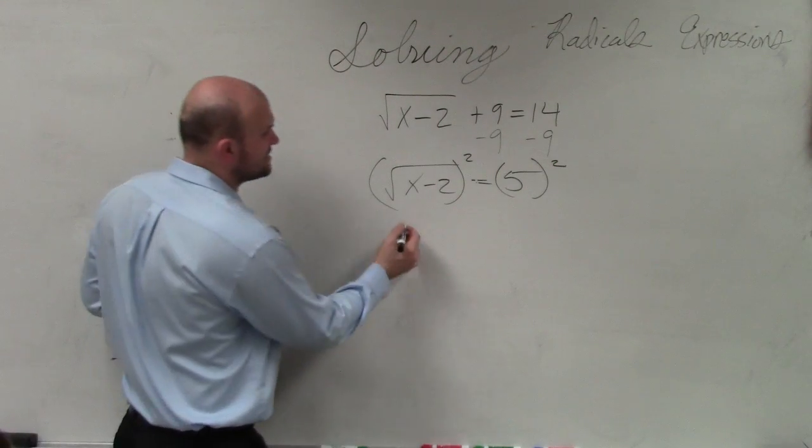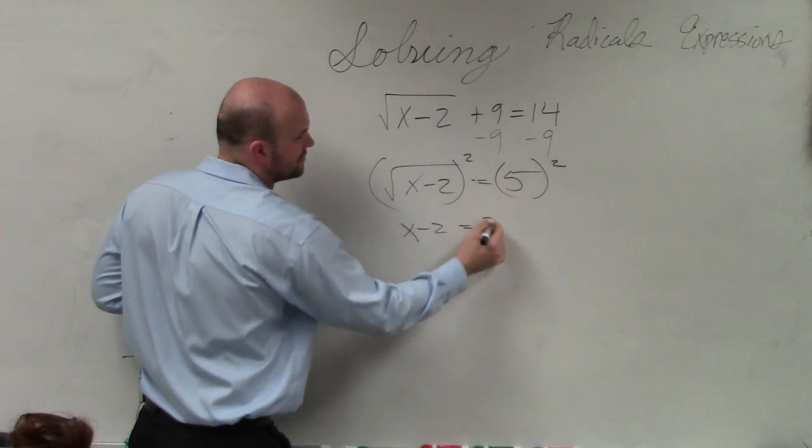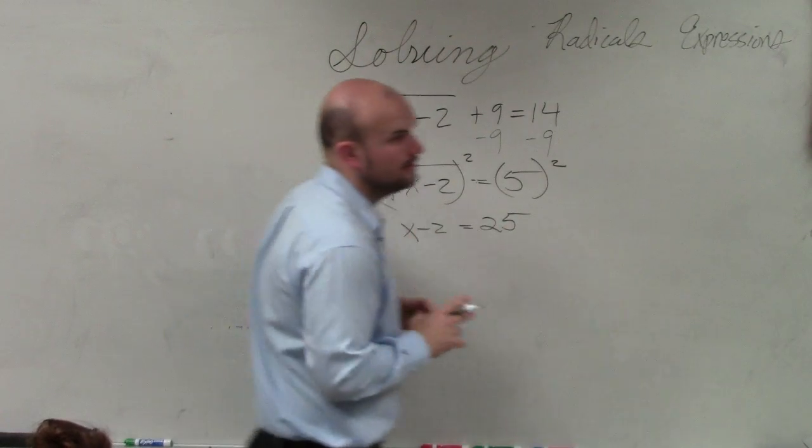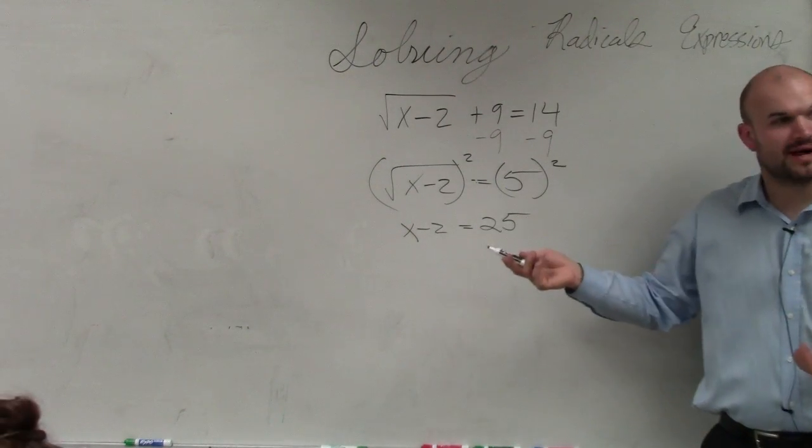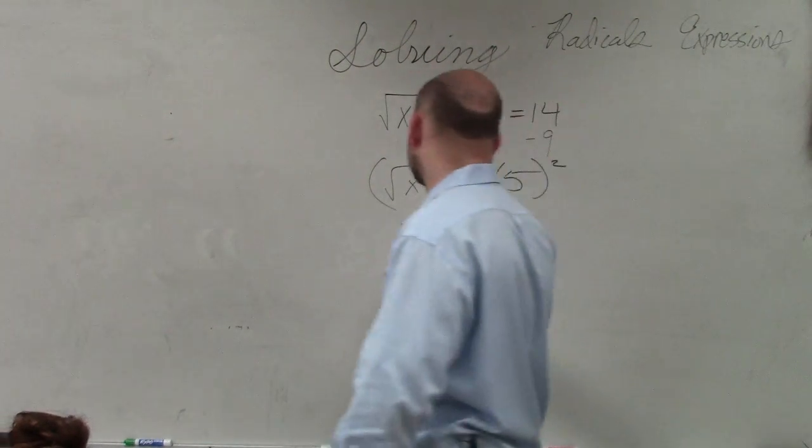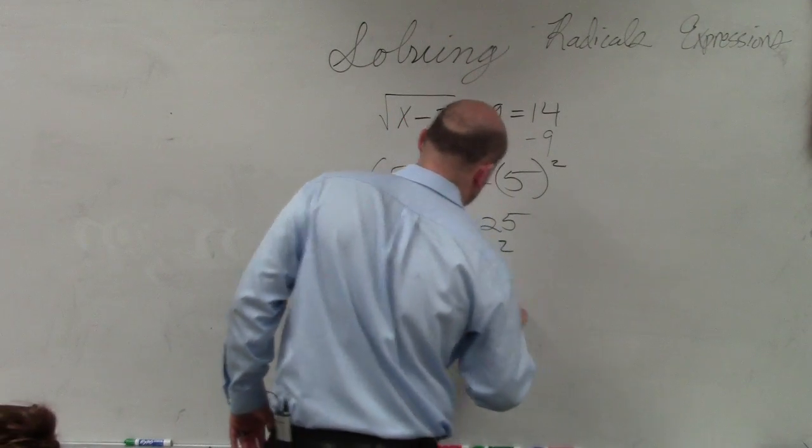So now I square both sides, and I get x minus 2 equals 5 squared, which is 25. Now I have a linear equation. So x equals 27.